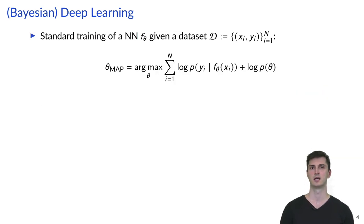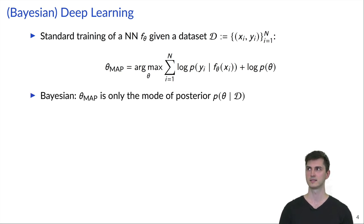The standard deep learning setup is that we have a neural network F parameterized by theta and an IID data set with data points Xi and labels Yi. Typically we want to find the maximum a posteriori estimate by maximizing the log joint distribution. In deep learning, the loss function corresponds to the negative log likelihood and the regularizer corresponds to the log prior. However, from the Bayesian perspective, the estimate theta MAP is just the mode of the posterior and completely ignores the uncertainty around it.